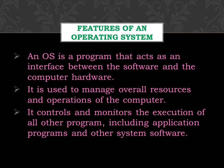Next topic is features of an operating system. An operating system is a program that acts as an interface between the software and the computer hardware. It is an integrated set of specialized programs used to manage overall resources and operations of the computer. It is specialized software that controls and monitors the execution of all other programs in a computer, including application programs and other operating systems.